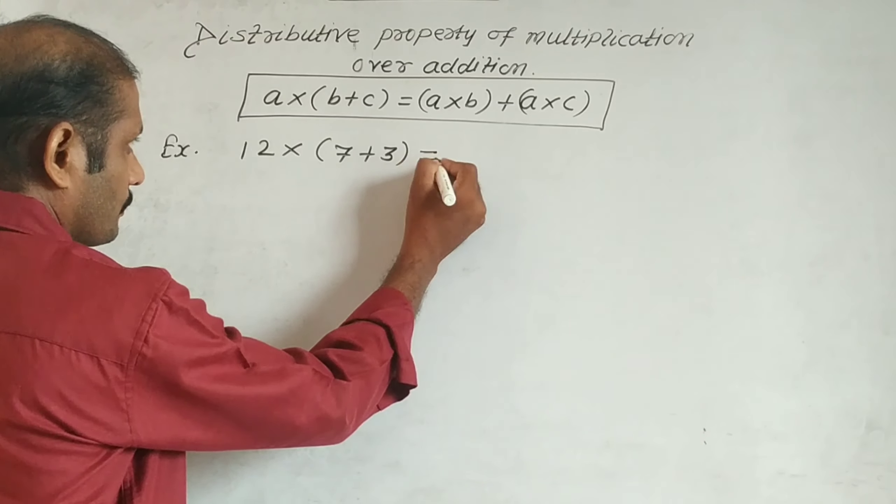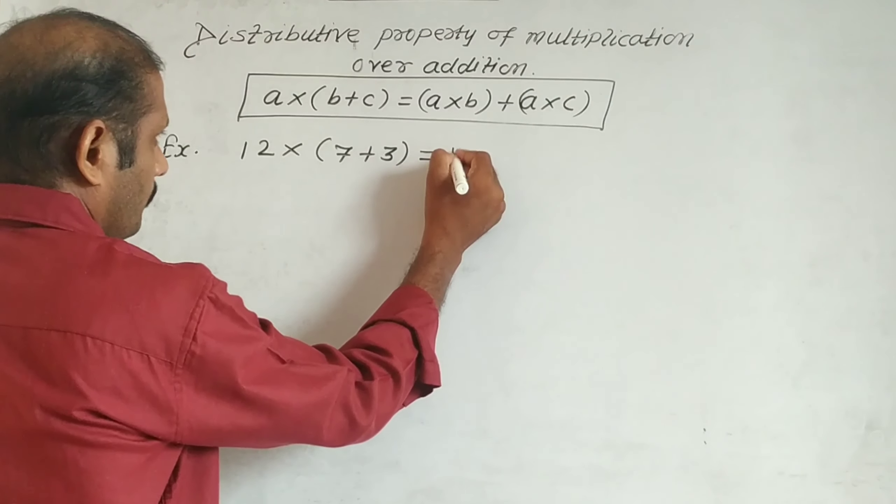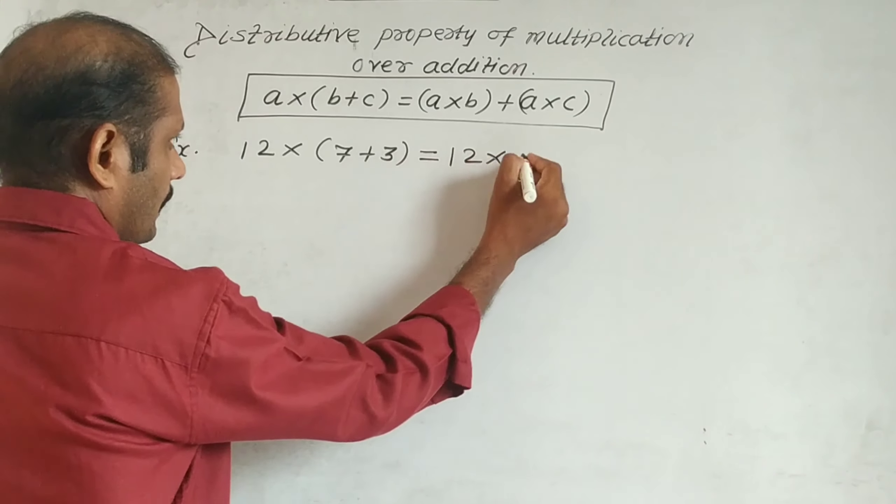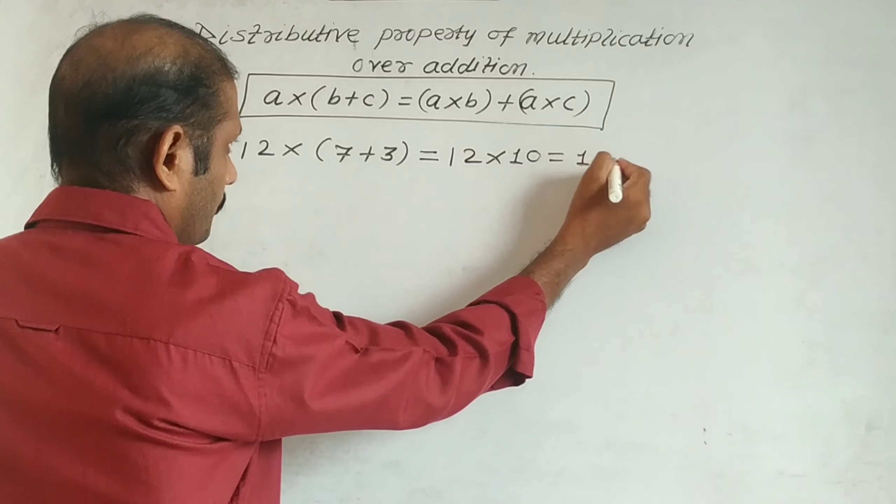So how do we do this? First we solve the bracket. 12 × (7 + 3). 7 plus 3 is 10, so that equals 12 × 10 = 120. This is our answer.